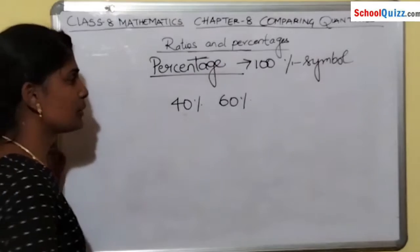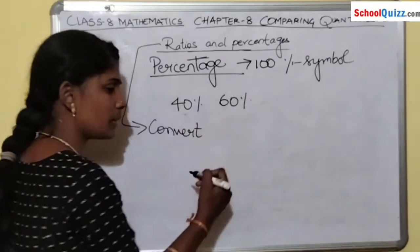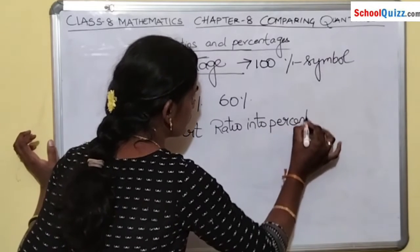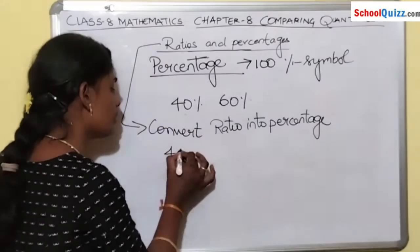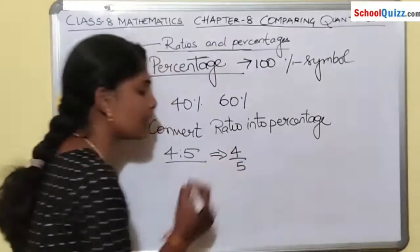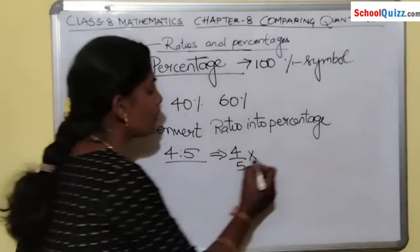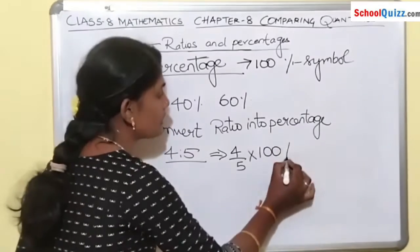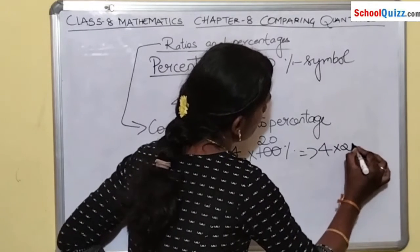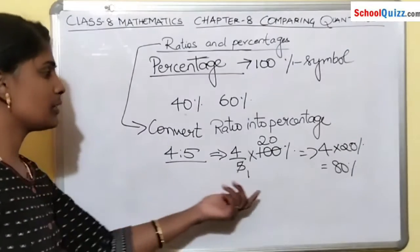Now let me explain how to convert a ratio into percentage. I am taking the ratio 4 is to 5, which can also be written as 4/5. To find the percentage, we multiply the number by 100: (4/5) × 100. Simplifying: 4 × 20 = 80%. So in this way a ratio can be converted into a percentage, and we got the exact percent.